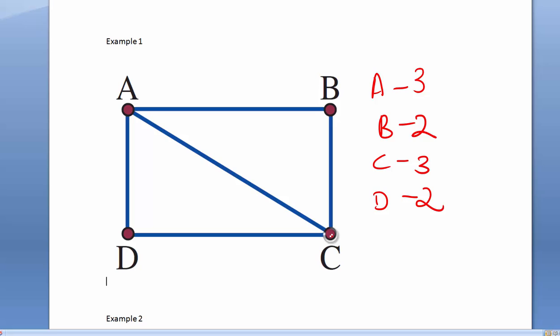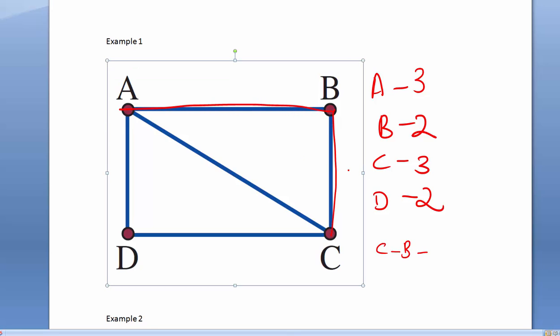So, I'll start with C because it has a degree of 3, and I'm going to go to B. So, let's write the path down, C to B. B to A. A to... Let's go to C. C to D. And D to A.